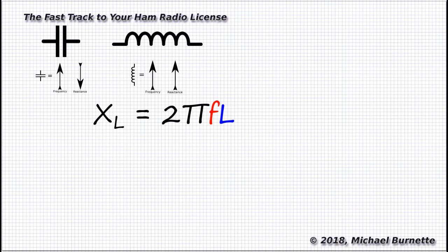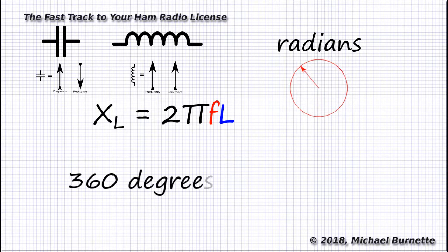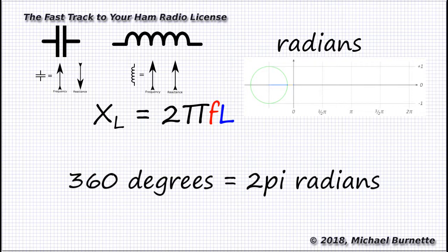If you're curious about the 2π that keeps showing up in our formulas, that relates to radians. Radian is a trigonometry term, and radians are an angular measurement used in place of degrees in a lot of scientific work to really vastly simplify formulas like this one. There are, of course, 360 degrees in a circle, and there are 2π radians in a circle. One cycle of a sine wave rotates through 360 degrees, or 2π radians.